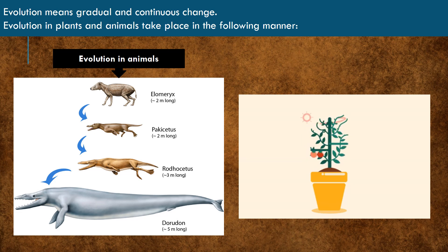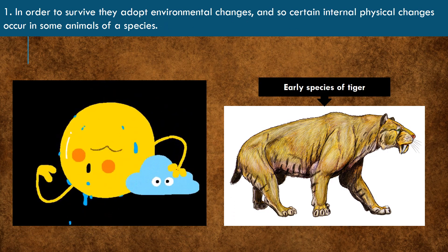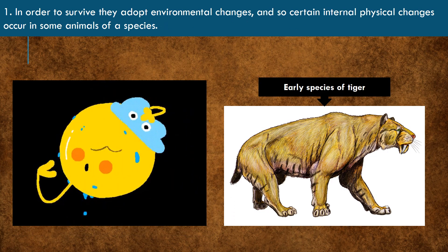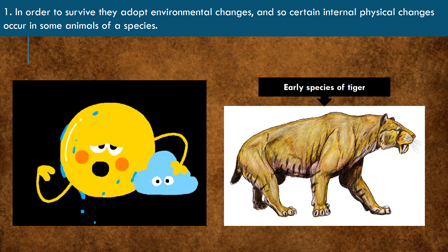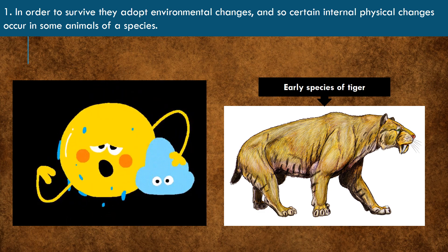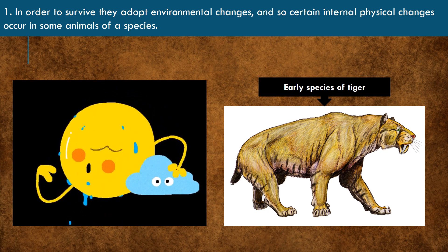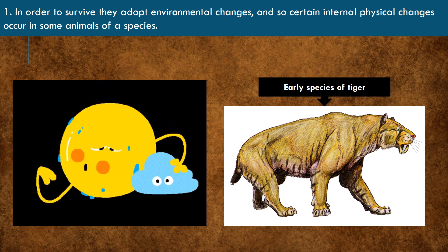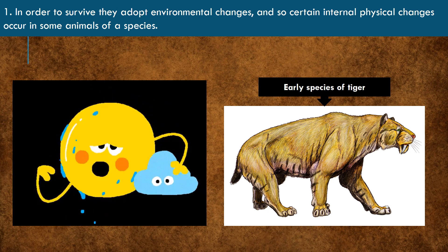Evolution in animals takes place in the following manner. Animals witnessed a lot of internal physical changes during evolution. For example, the early species of tiger and the modern tigers of today.